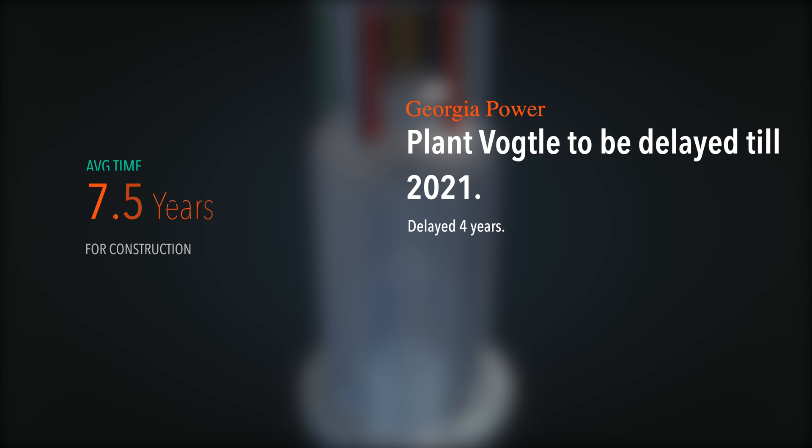The average time it takes to build a power plant is about 7.5 years, and total costs could reach tens of billions of dollars.